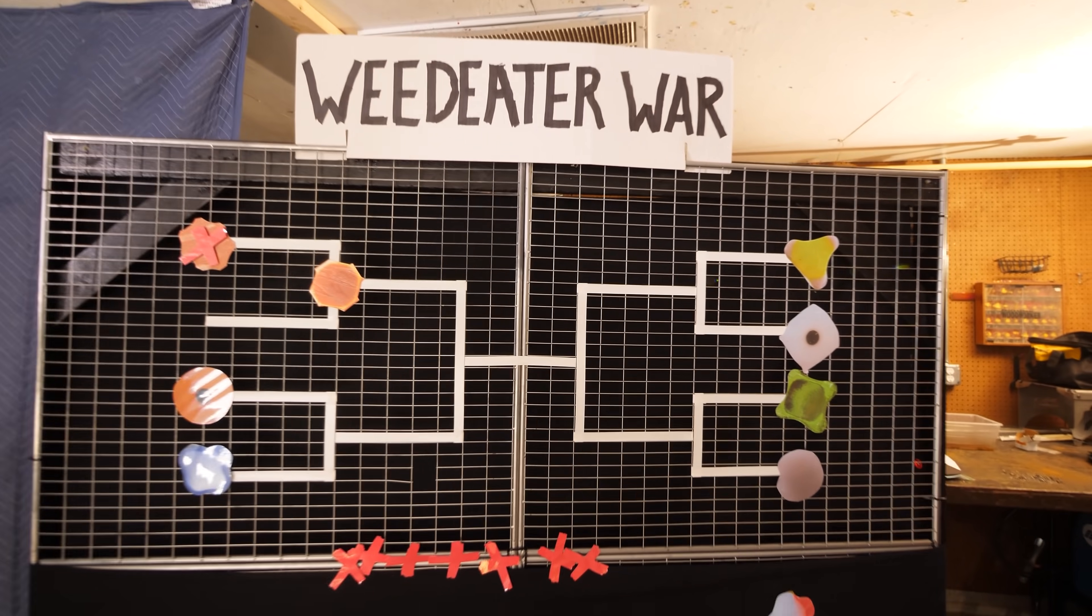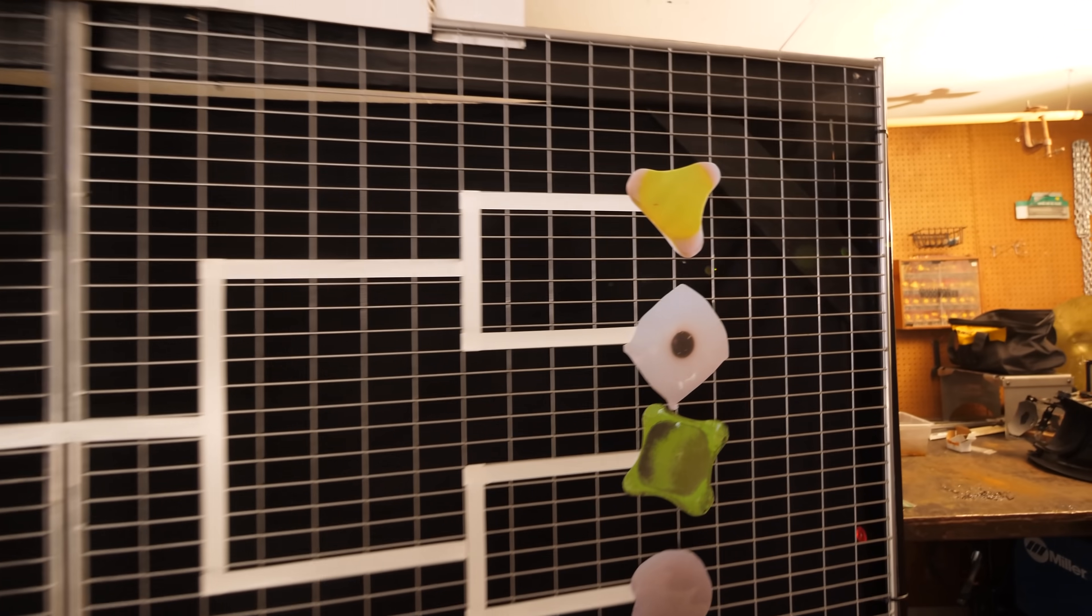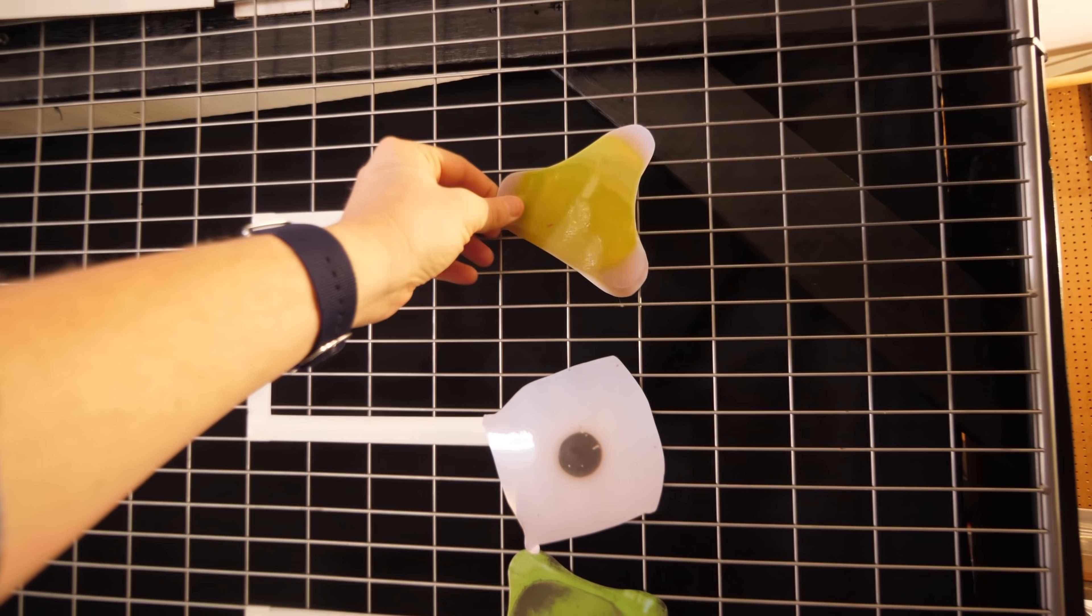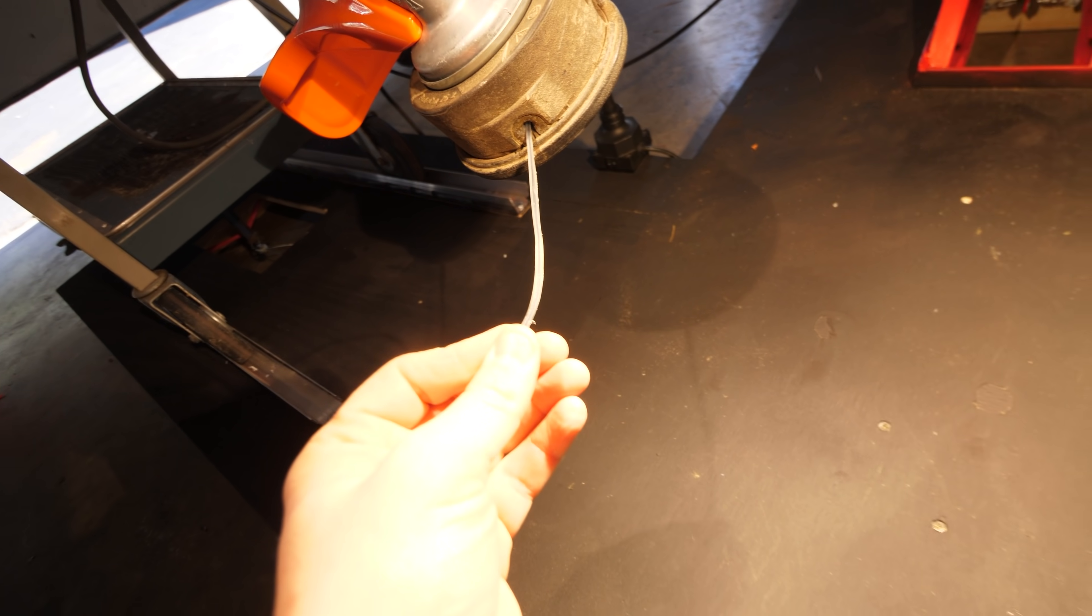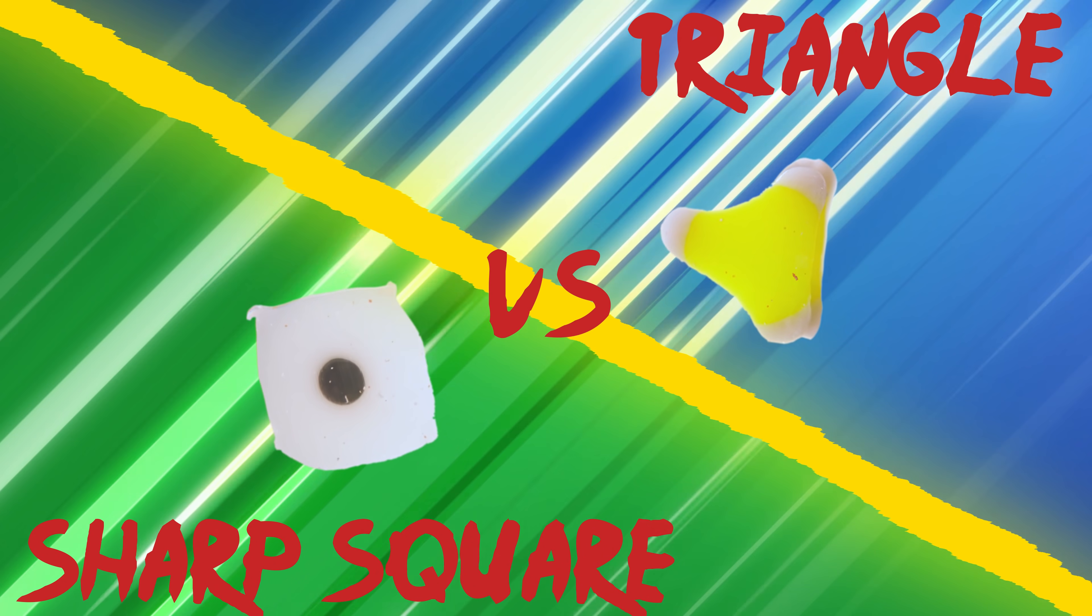So who do we have next, Jeremy? Which one you want to go for? Let's go to the other side of the bracket. Here we go. Sharp square versus triangle. Got sharp square on the left, triangle on the right. Battle two. Triangle versus sharp square. Fight!